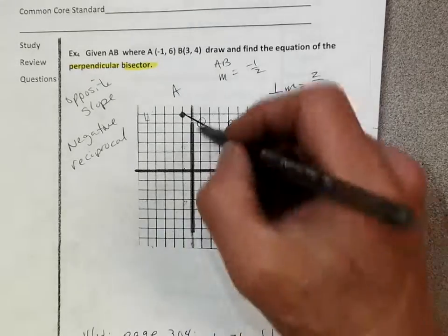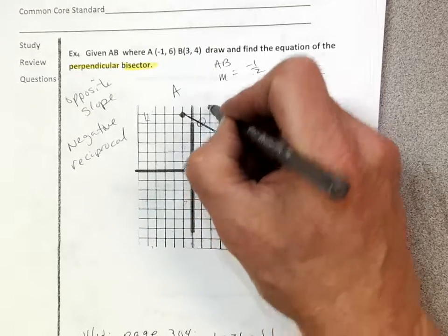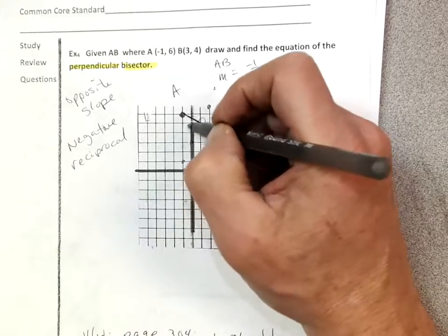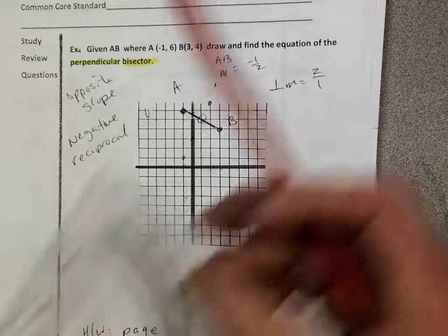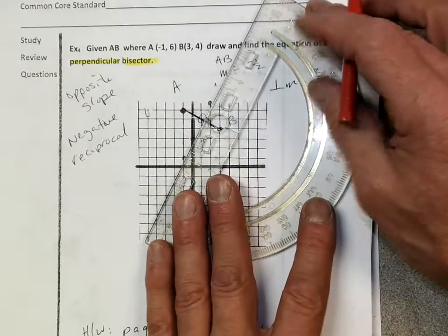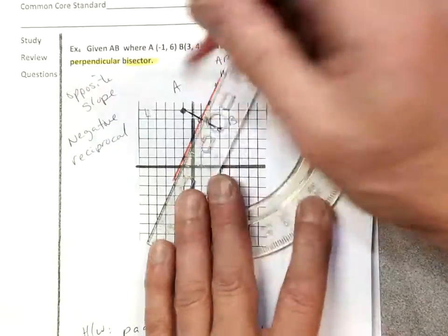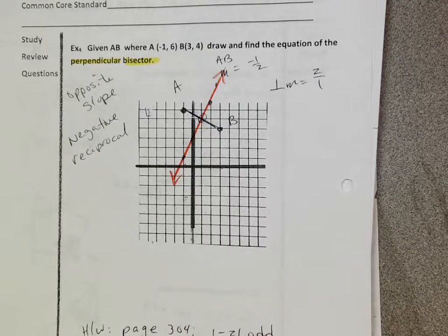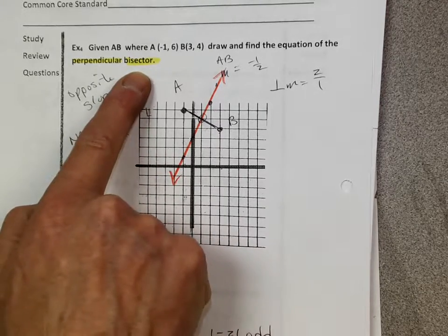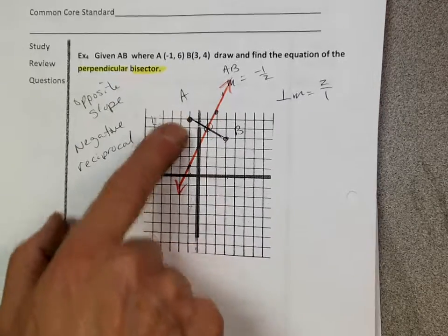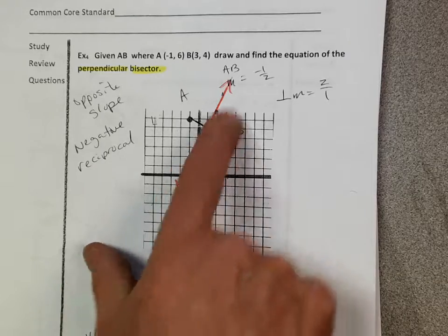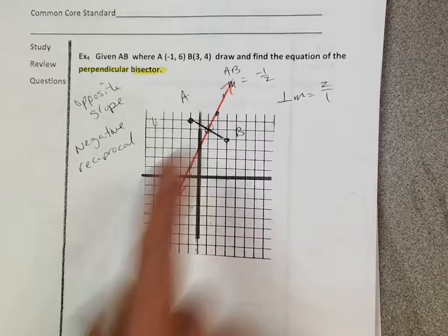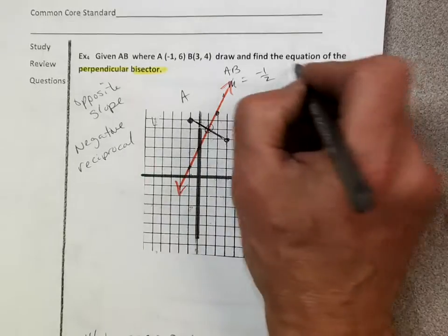So if I went from here up 2 over 1, up 2 over 1, 2, 1, 2, 1, the perpendicular bisector is this line right here. All right, let's look at this line. Does it bisect AB? Yeah, it goes right through the middle, doesn't it? Let's look at this red line. Is it perpendicular? Absolutely, because it has the negative slope. Now, here's the next part. We need the equation, all right?